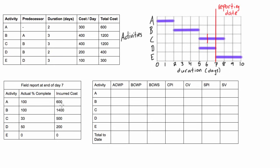Activity D is 50% complete by end of day seven. We were expecting it to be fully completed based on our original plan, but only 50% has been completed — we can shade that in. Activity C has also only been partially completed. Activity E hasn't started yet, which was expected, and it's good to note we're not ahead of schedule by having already started activity E.